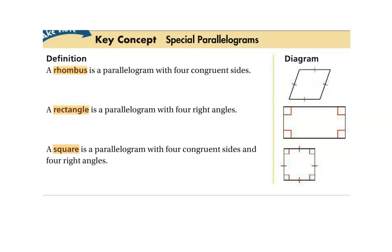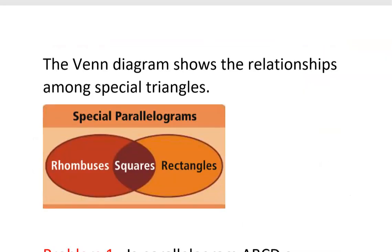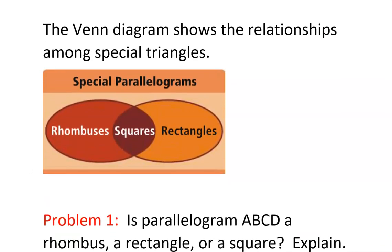A square is kind of like a rhombus, a rectangle, and a parallelogram all at the same time — you're looking for four right angles and four congruent sides. A Venn diagram shows the relationships among special parallelograms: rhombuses on the left, rectangles on the right, and squares in the middle, meaning squares can be both rhombuses and rectangles.